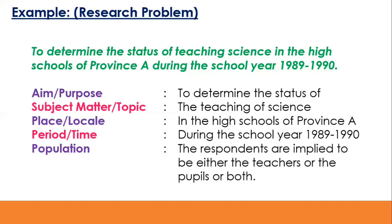The period or time is 'during the school year 1989 to 1990.' The population is implied to be either the teachers or the pupils or both. When I say implied, it was not directly stated in the problem, but we could tell it could be the teachers or the pupils of the school. In formulating the title of a research inquiry, the aim is usually omitted and sometimes the population is not also included.